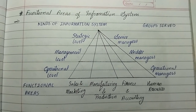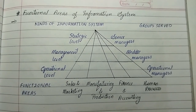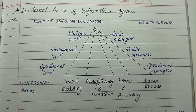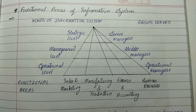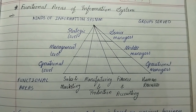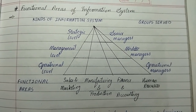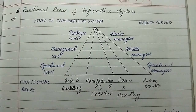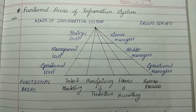Hello guys, welcome back to On Time Notes. In this video we are going to cover functional areas of information system. This is the diagram we will draw for functional areas of information system. It is similar to the diagram of types of information system, but there were four levels in types of information system — operational, knowledge, management, and strategic levels — whereas for functional areas of information system we have only three levels: operational, management, and strategic. The functional areas are sales and marketing, manufacturing and production, finance and accounting, and human resources.